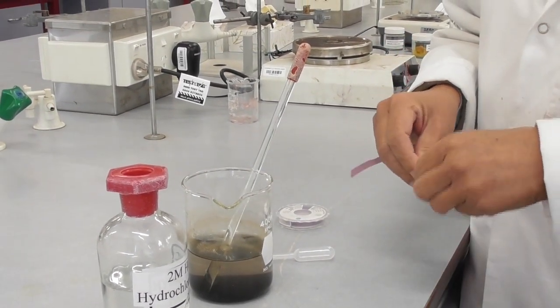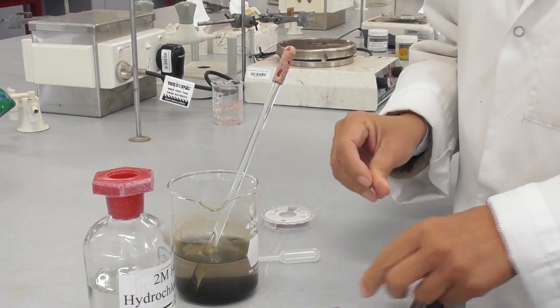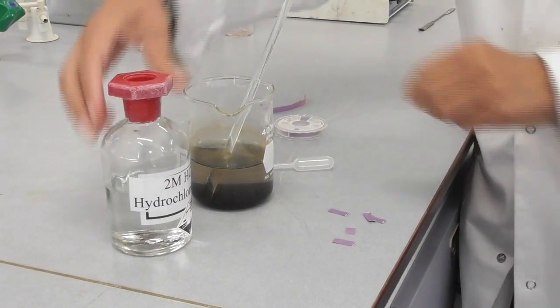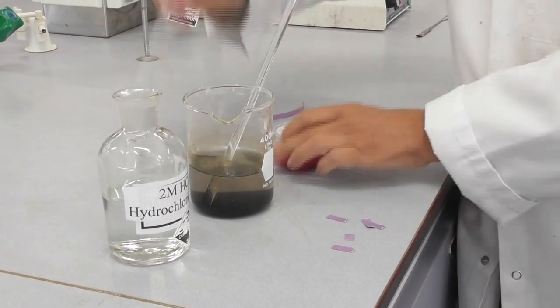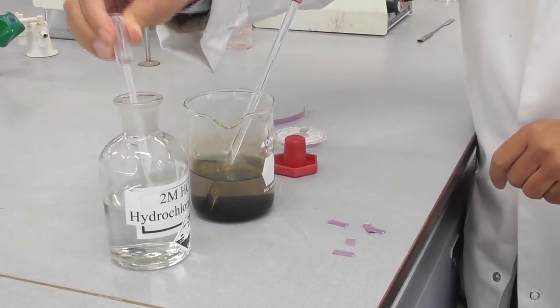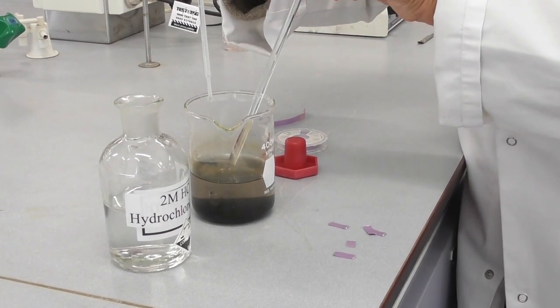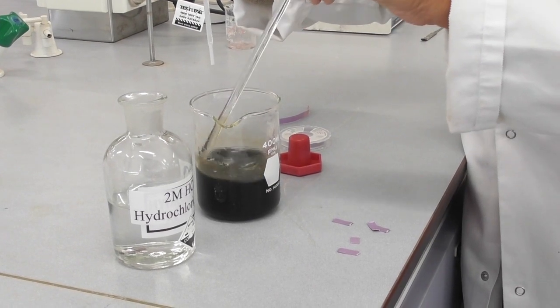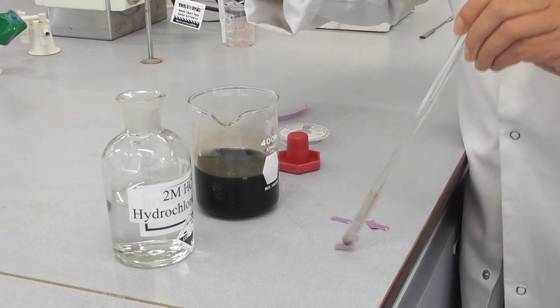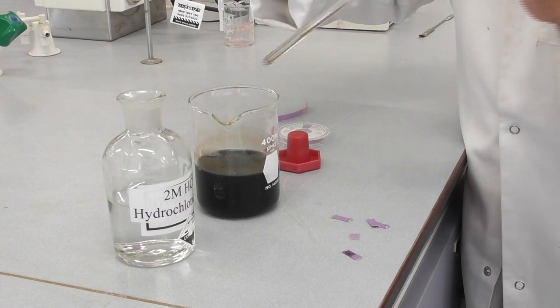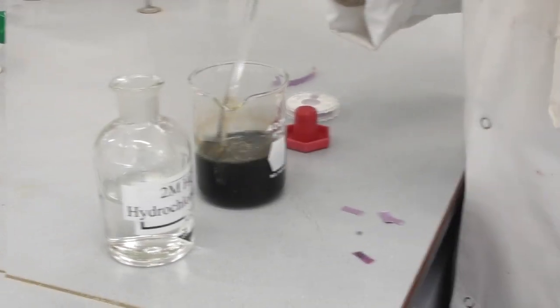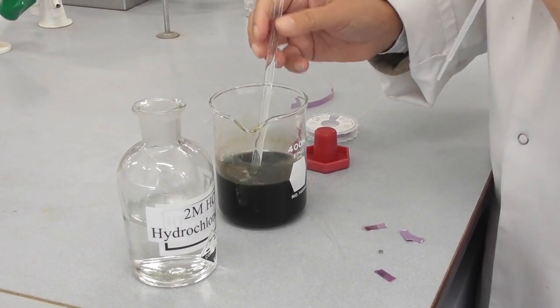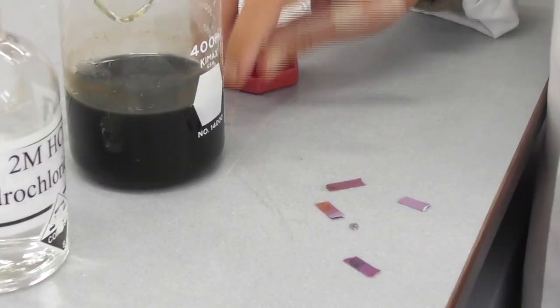The next step is to neutralize the solution with 2 molar hydrochloric acid. I prepare some strips of litmus paper and then I add a milliliter or two of the hydrochloric acid into my solution. I give it a good stir and check the pH with the litmus paper. If the litmus paper turns pink, then my solution is neutral or acidic. This might take a few tries.